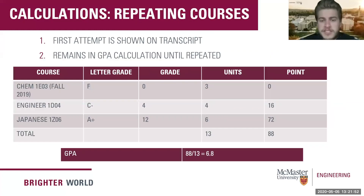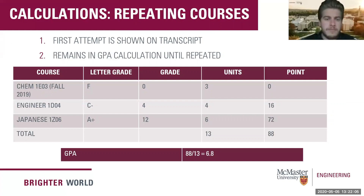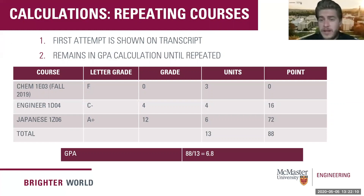For this example, we'll use the same courses, but in this scenario Chem 1E03 was taken in fall 2019 and the hypothetical student received an F. That F is going into their GPA, and as you can see, their GPA with our calculations is now a 6.8.